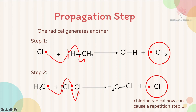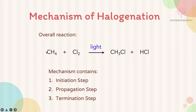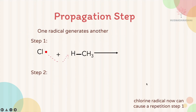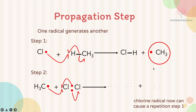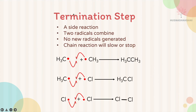This chlorine free radical attacks methane again, and these two propagation steps repeat until the concentrations of CH₄ and Cl₂ are depleted. When free radicals become scarce, the next step is the termination step — a side reaction where two radicals combine and no new radicals are generated, slowing or stopping the chain reaction.